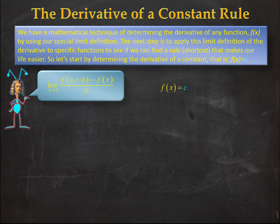So let's look at our function f of x equals c. We're going to apply our limit definition. So our derivative f prime of x is equal to limit as h goes to zero of f of x plus h minus f of x all over h.